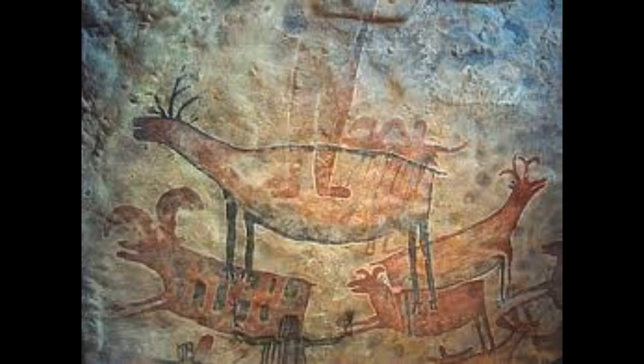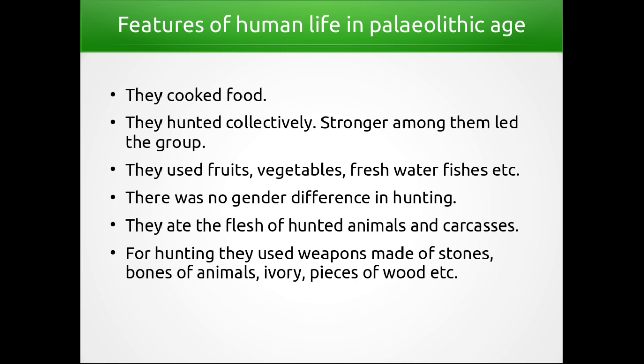Besides cave paintings, we get historical evidence of this period from stones, ashes, bones and skulls of animals, leftovers of fruits, vegetables, and freshwater fishes. From these evidences, we can assume that they cooked food and hunted collectively. They used fruits, vegetables, freshwater fishes, etc. There was no gender difference in hunting.